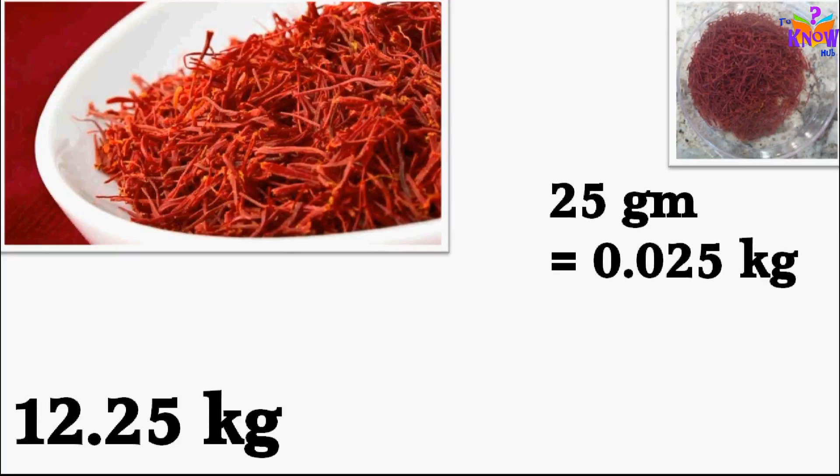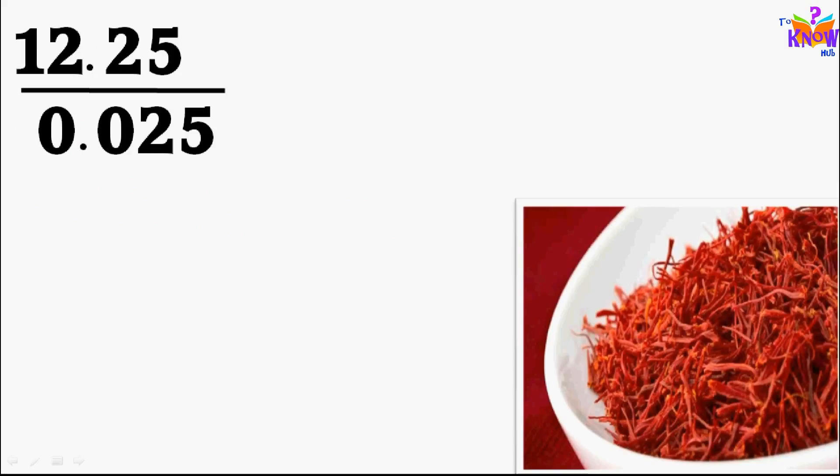25 gram means 0.025 kg, isn't it? 12.25 kg divided by 0.025 kg. 25 gram is equal to 0.025 kg because thousand gram equals to 1 kg. So 25 gram is equal to 0.025 kg. So how many packs can we make?